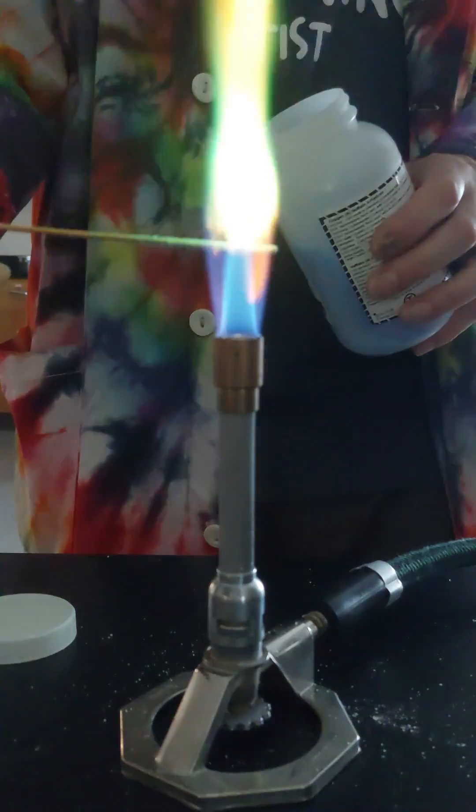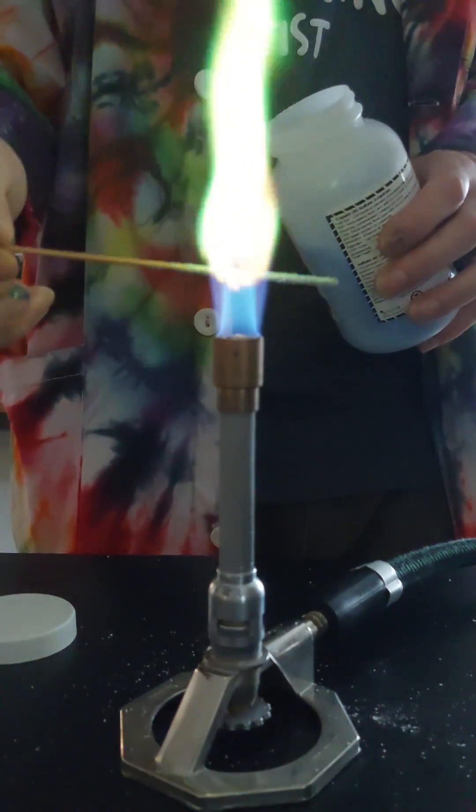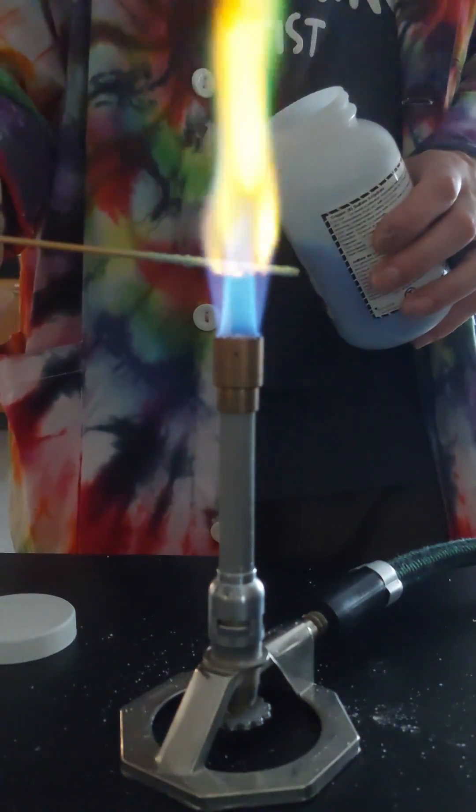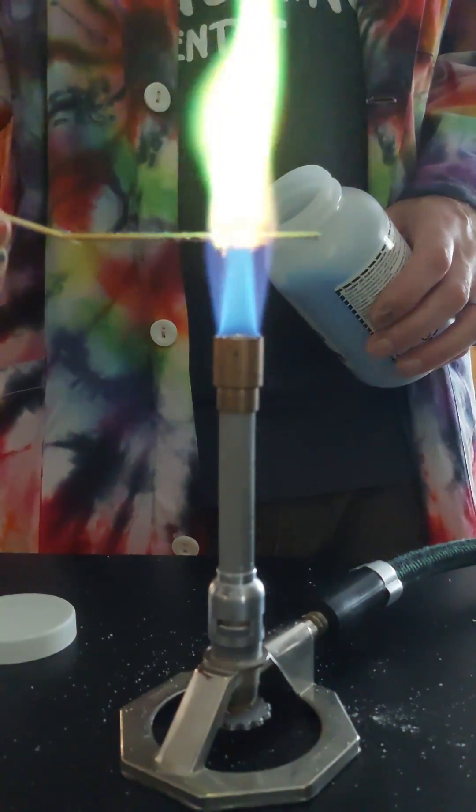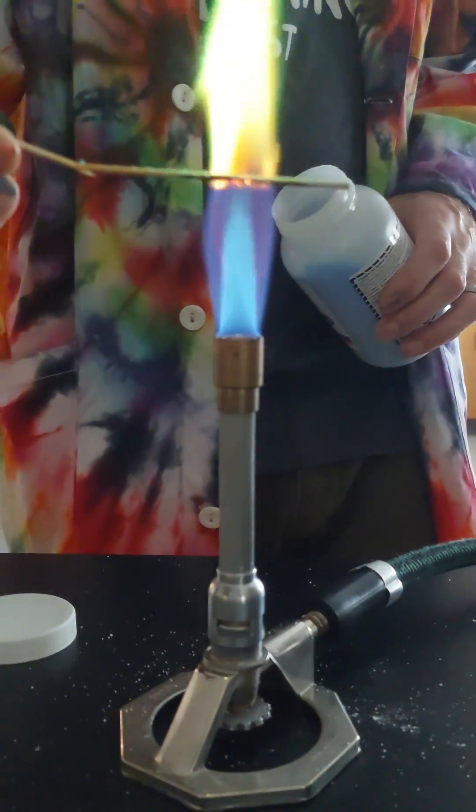And, of course, we've saved everyone's favorite for last, copper sulfate. Now, copper sulfate should give a characteristic emerald or jade green in the flame, but as you can see here, the lighting in the room has a tendency to make it appear yellow.